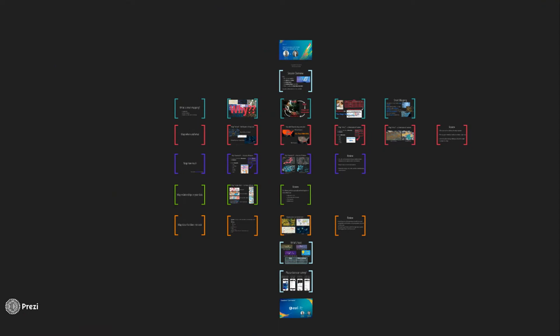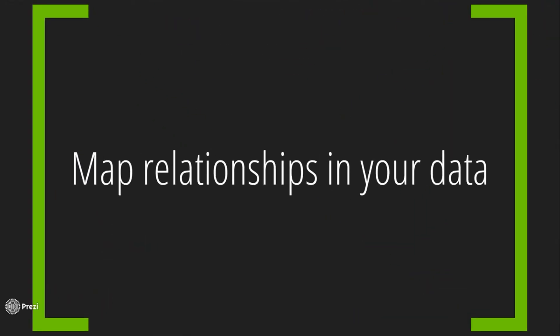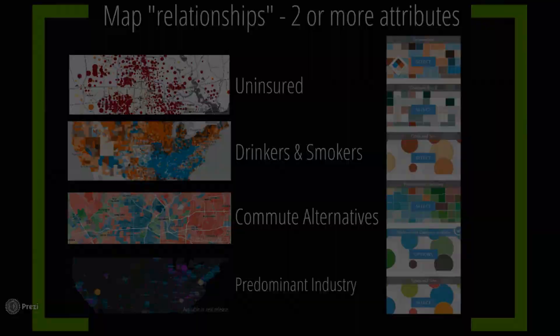The fourth section, mapping relationships in your data, covers how one value or variable relates to another attribute. Examples include uninsured people, drinkers and smokers, and commute alternatives. We'll start with the uninsured map.